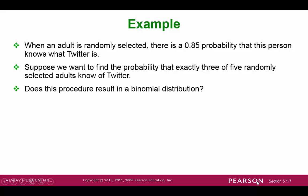Let's take a look at an example. Suppose there is an 85% chance that a person knows about Twitter. If we randomly select 5 adults, let's find the probability that exactly 3 out of 5 of them know about Twitter.